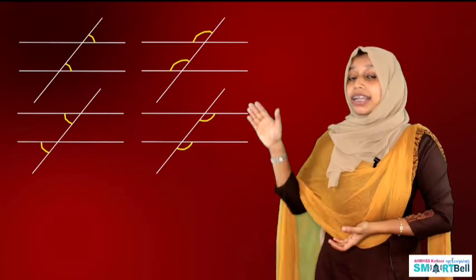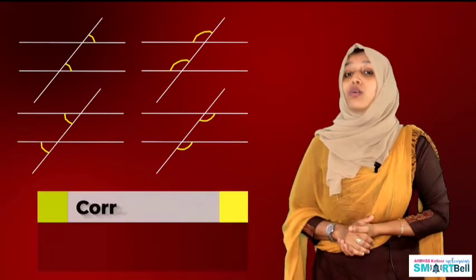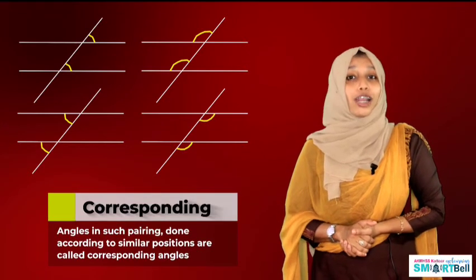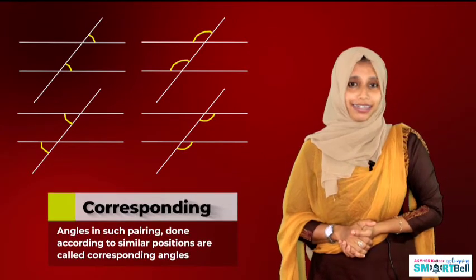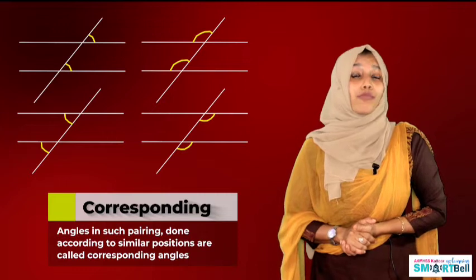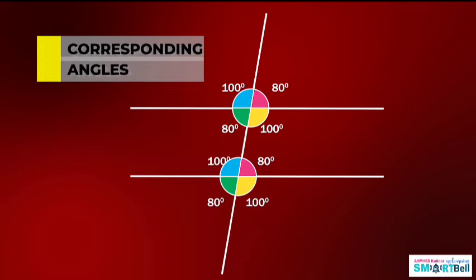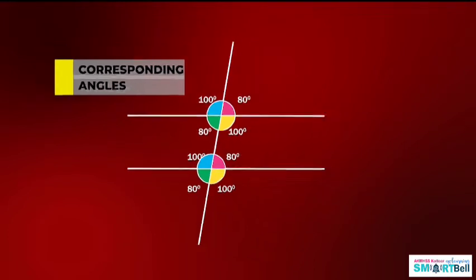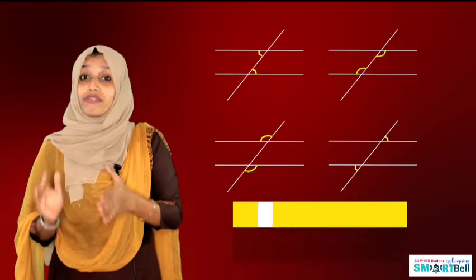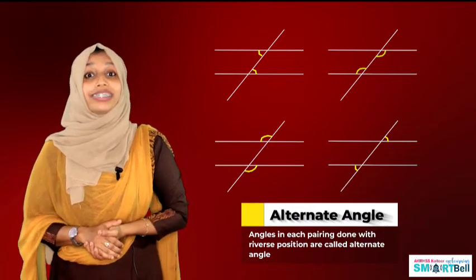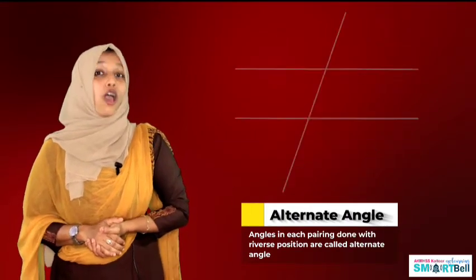Let's look at pairs of equal angles. Angles in such pairings that are according to similar position are called corresponding angles. Equal angles from the top and bottom can also be made by another pairing — angles in such pairings that are according to reverse position are called alternate angles.